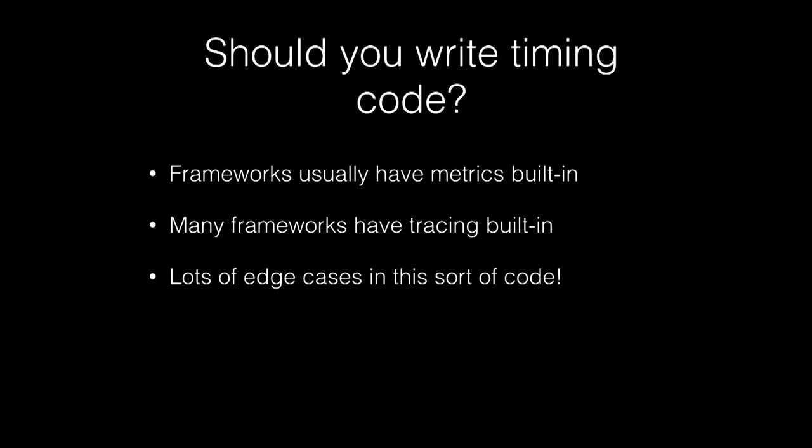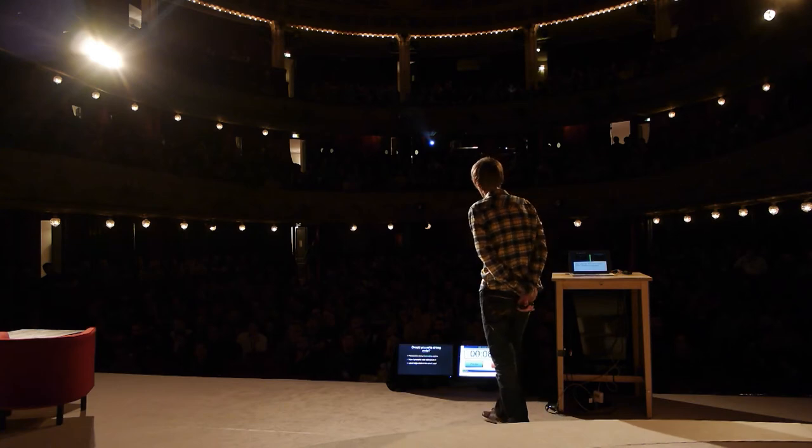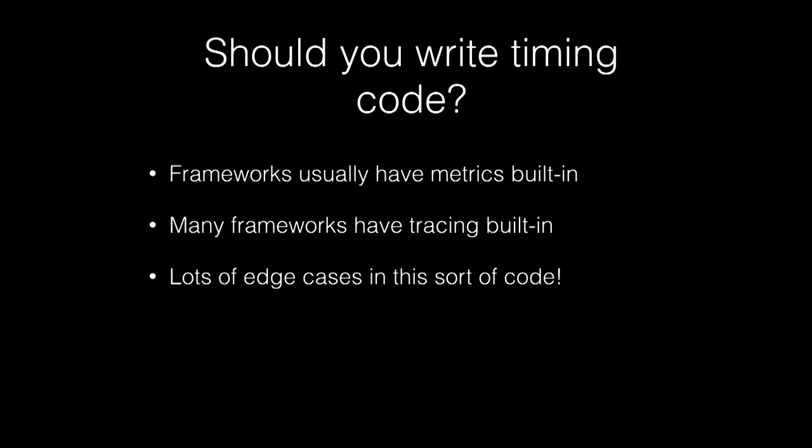After having said that — should you be writing timing code in the first place? Most frameworks already have metrics built in, or interceptors where you could add metrics based on pre-computed things like duration. An increasing number of frameworks have tracing built in too. So if you don't see this type of code or its outputs already, you could ask via issue or with the framework you're using. That might not be a bad idea because timing code has lots of edge cases: clock skew, sparse data, how to deal with overhead.